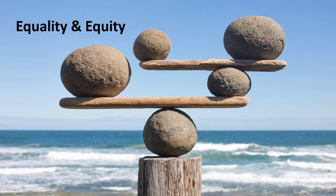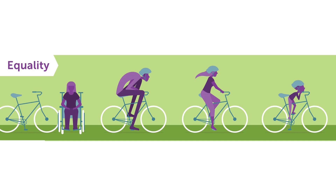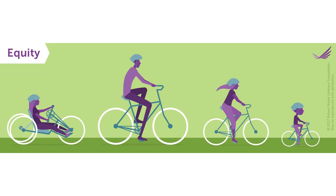Equality and equity are often used interchangeably. However, they are different approaches to achieving balance. Equality is everyone having the same resources and the same access to opportunities. In this image, we see that each person has the same bicycle. Everyone received the same tool, but each person experiences the challenge to effectively using that tool. Equity, on the other hand, is ensuring that everyone has accommodations along with the same resources and the same access to opportunities. In this image, everyone has a bicycle, however they are adjusted to meet the needs of each individual, so whether they are riding to work or on a trail, each person can ride the bicycle within their abilities.